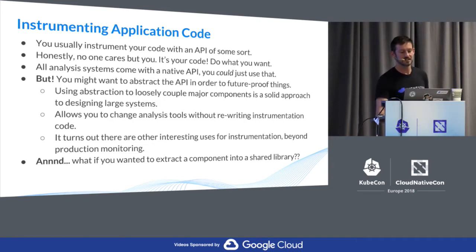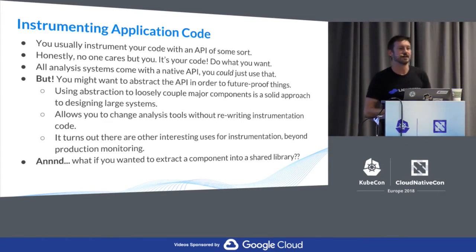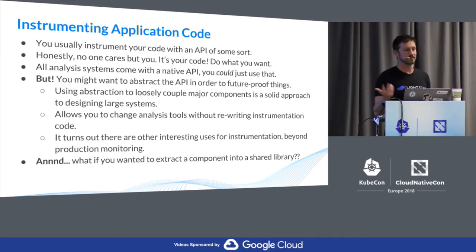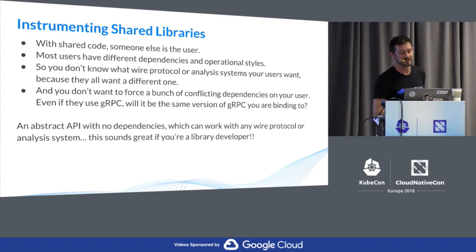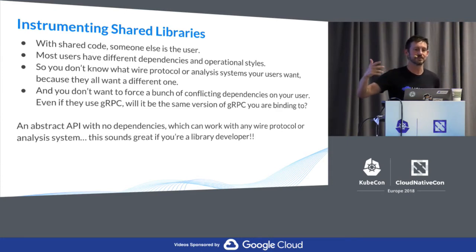When you go to instrument your own application code, I don't think you have to use anything in particular — you can do whatever you want, that's your code. But a very common thing is wanting to take some application code, pull it out as a shared library, and let other people use it. As soon as you want to instrument shared libraries, you run right into the problem of not wanting to make backend decisions for your users. You need some kind of abstracted API to bake instrumentation directly into your library, rather than people writing a bunch of plugins and adapters for each tracing or monitoring system.